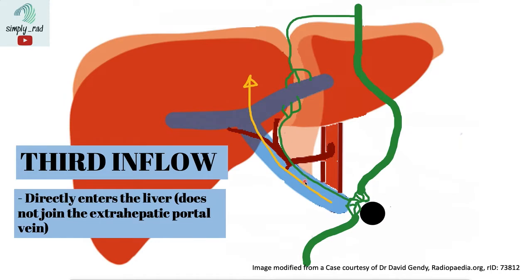For example, in liver cirrhosis, the normal flow of blood into the liver would become reversed. This reversal of flow will create collaterals in the periumbilical region, eventually creating engorged periumbilical vessels — caput medusae.